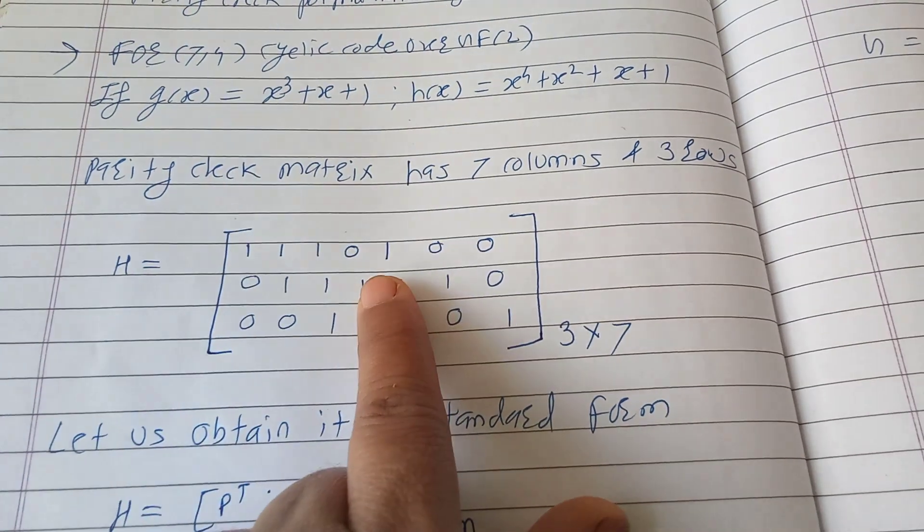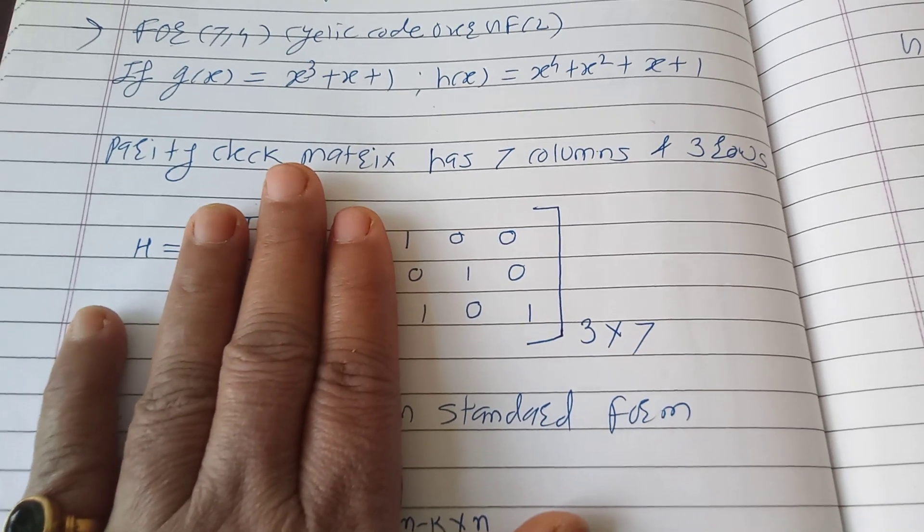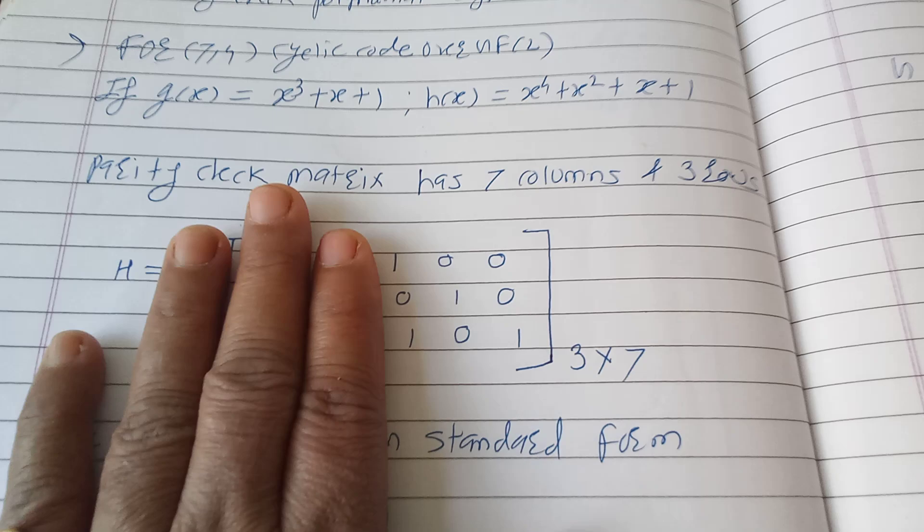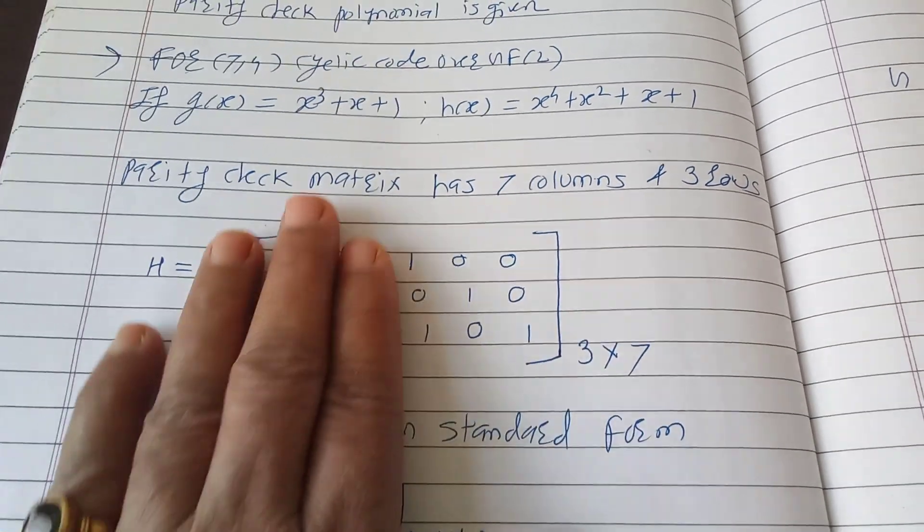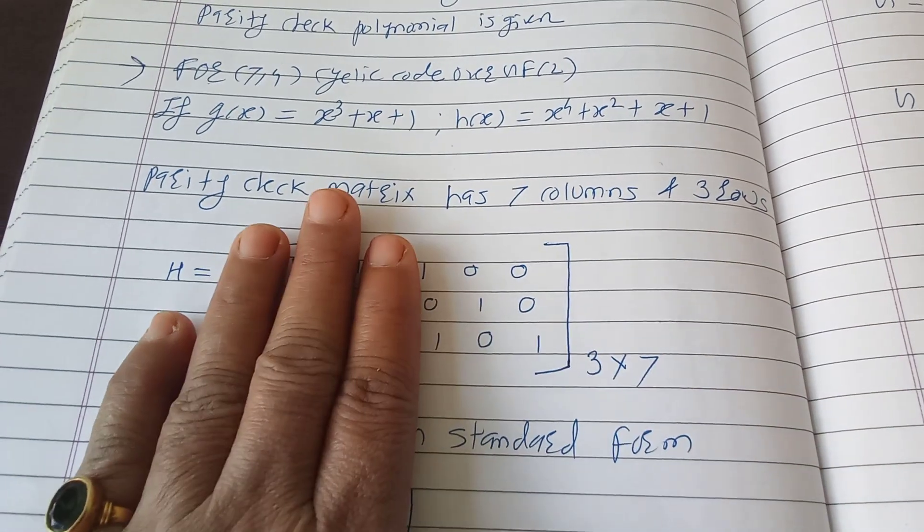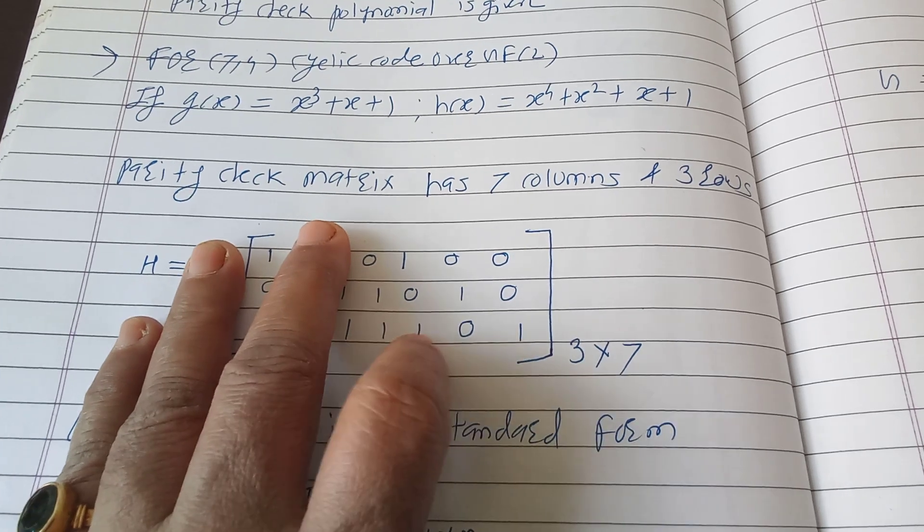So to get the 3 by 3 identity matrix you can observe here: 1, 0, 0 - first row is okay, that is in identity form. Second is okay. Third is not okay where you get this extra 1. So to cancel out this extra 1 you need to add R1 and R3.